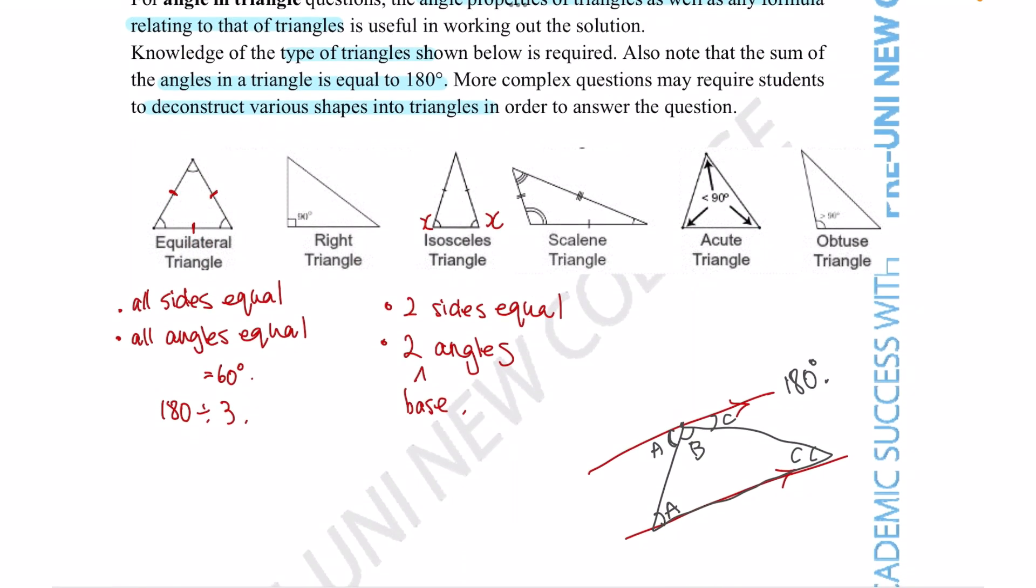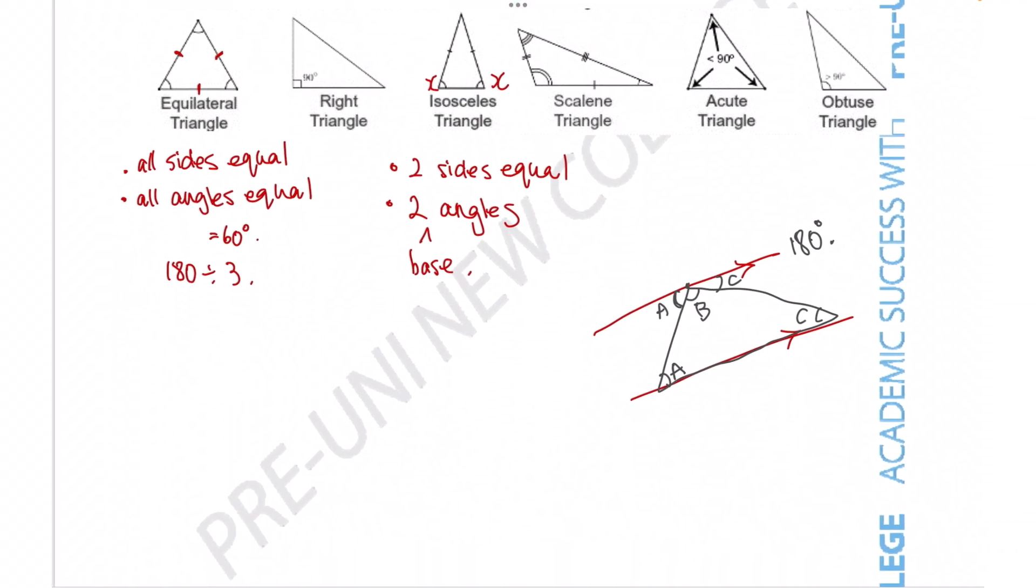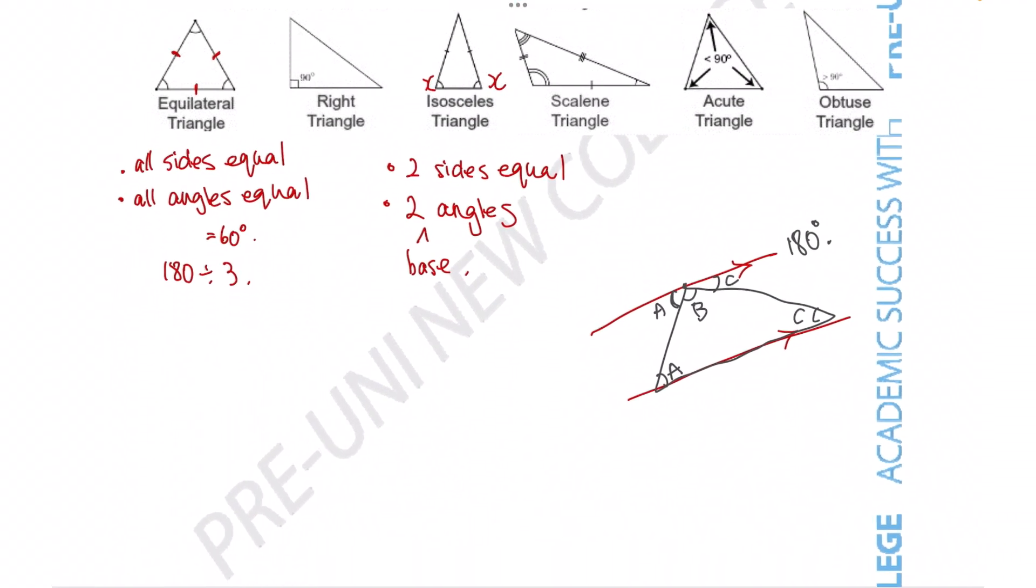Now, one more thing that the description made note of was the fact that triangles can be utilized to construct more difficult shapes. For example, if we take a look at a hexagon, we can tell that it's going to be composed of multiple triangles or a quadrilateral. Sorry, that's not a quadrilateral. Quadrilateral means there's four sides. So we can break most shapes up into triangles.